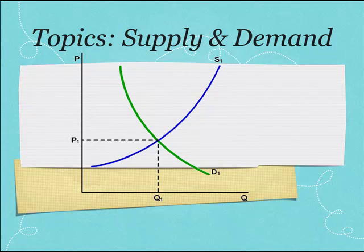Notice how the equilibrium price and quantity are denoted on the graph on this slide. This is how you will mark them for your 2.03 graph, as this is now what is expected on the AP exam.